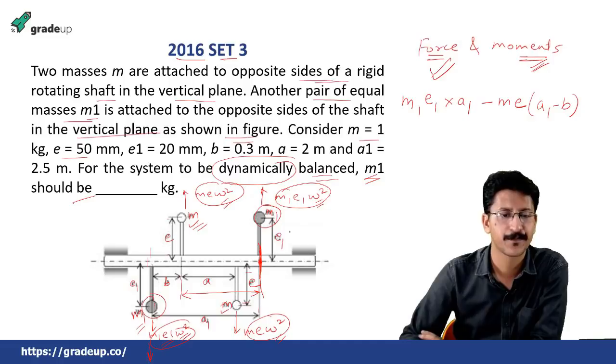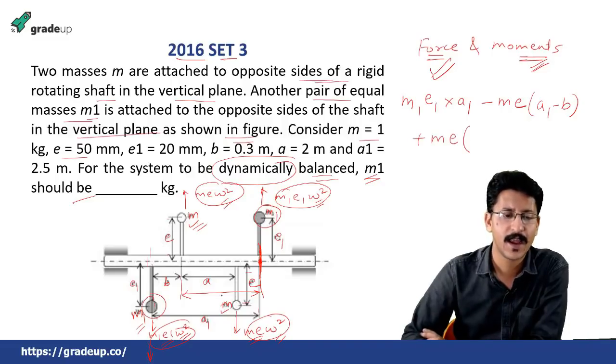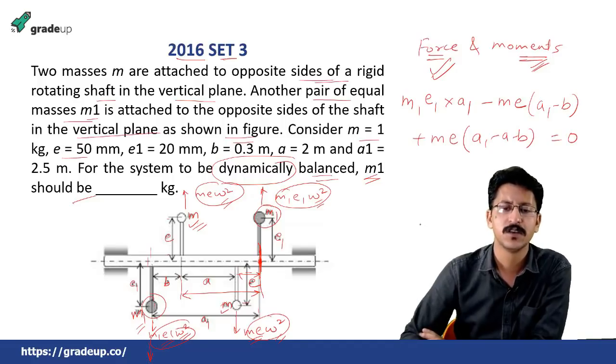So minus m e into a1 minus b, m e into a1 minus b. Then next is this force. The force due to this mass m into e, this will again be clockwise. So plus m into e and then this distance. What will be this distance? a1 minus a minus b, a1 minus a minus b and this will be equal to 0.